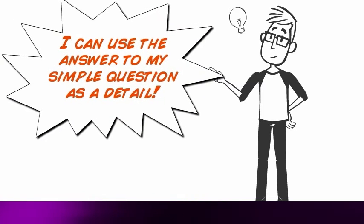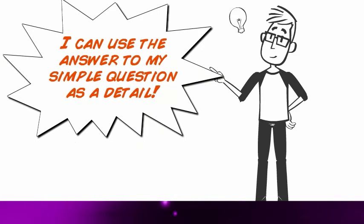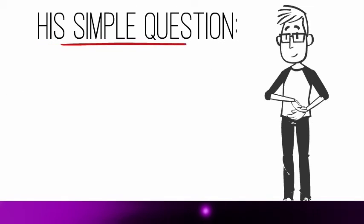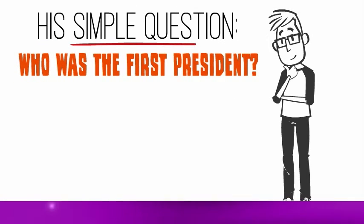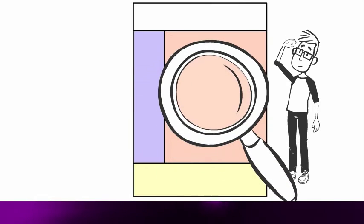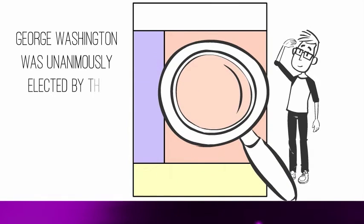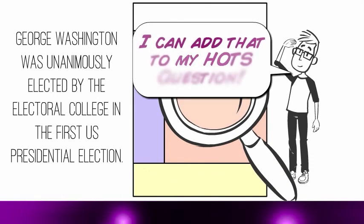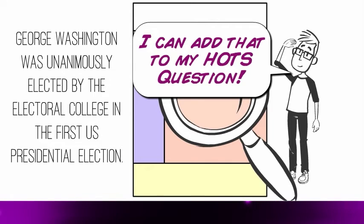Cameron can do that by adding in the answer to his simple question into the body of his HOTS question. His simple question was 'Who was the first president.' The answer he knows is obviously George Washington, so he's going to add that detail to his question. He looks at his quick notes and sees that Washington was unanimously elected by the electoral college, so he's going to add that detail as well.